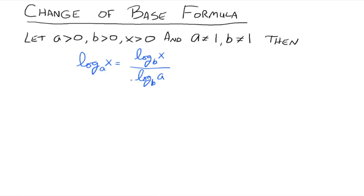So the way to think about this is we're changing from base A to base B. And the numerator is going to be the logarithm of the argument, same argument that you had previously. And the denominator is going to be the logarithm of the old base.